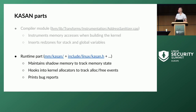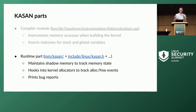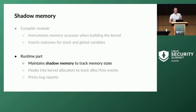The runtime also needs to update the shadow memory when new memory is allocated or freed, so it hooks into kernel allocators. Finally, it contains logic to detect bugs and print bug reports. We're going to start with the idea of shadow memory.